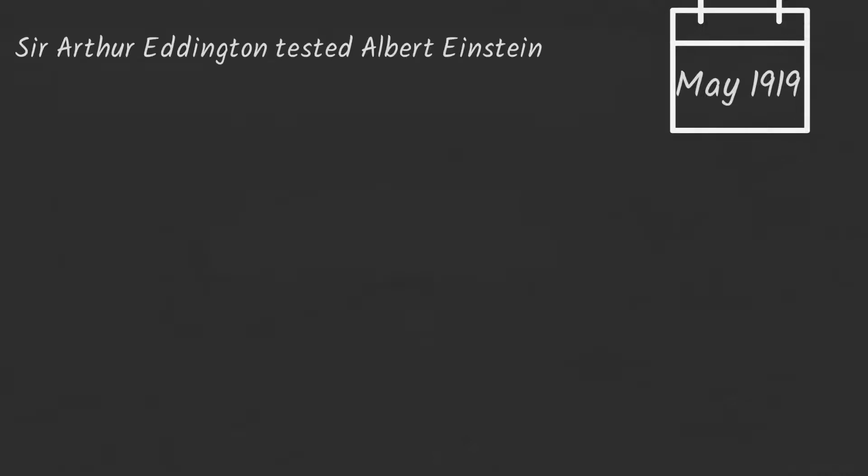Scientists have used eclipses to make discoveries in more recent times too. On May 1919, Sir Arthur Eddington tested Albert Einstein's theory of general relativity during a total solar eclipse.